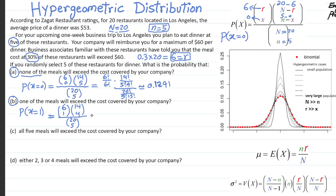So computing that: 6 choose 1 is 6 factorial divided by 1 factorial times 5 factorial, which is effectively 6. Then 14 choose 4 is 14 factorial divided by 4 factorial times 10 factorial. The denominator is as before, 20 choose 5.